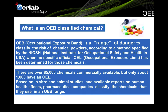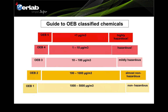So how do they create it? Based on the data collected from in vitro and animal studies, and also the available reports on human health effects, from all this information the pharmaceutical companies will classify the chemical powder into OEB ranges. Let's look at the ranges. The smaller the number, the less hazardous; the higher the number, the more toxic and hazardous.